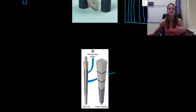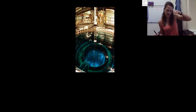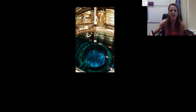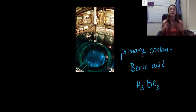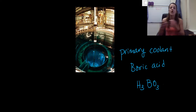Once we have our fuel assembly, we submerge it inside what's called a primary coolant. It's a tall sphere-ish shaped pool. Our primary coolant is usually boric acid — H₃BO₃ — because the boron readily absorbs neutrons. We also use this primary coolant to keep the fuel assembly cool and to harness the energy, moving it away from the fuel assembly to our turbine and generator, just like in a conventional power plant.